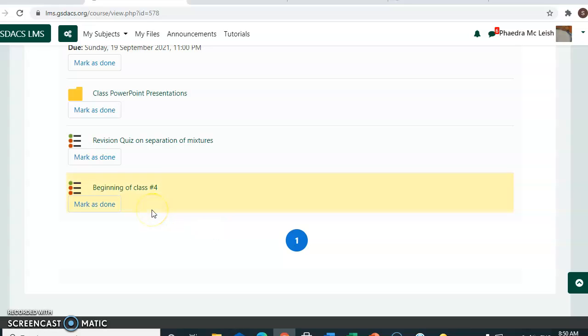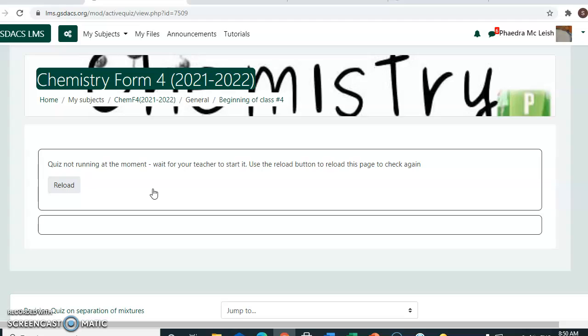I ask them to go to the subject page and look for active quiz, beginning of class number 4. This is the student clicking on the quiz. They will see quiz not running at the moment, wait for the teacher.